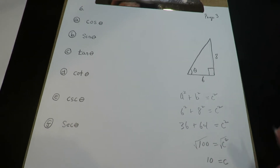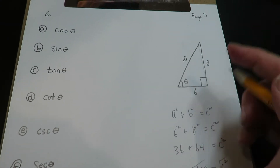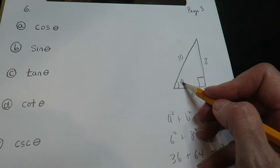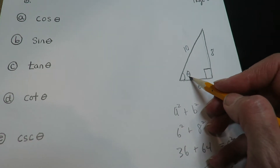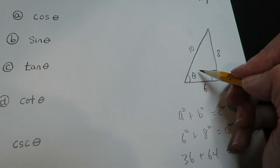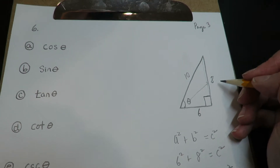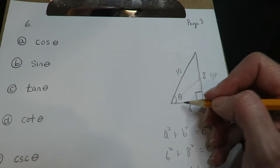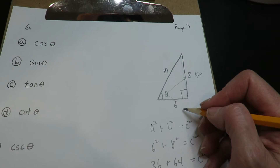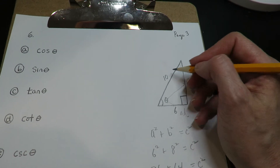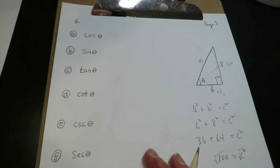So now we've got that — this is 10 — and we know where our angle is. Our angle is here, and we just have one angle in this triangle we're looking at. The eight is across from the angle, so this is my opposite. The six is touching the angle, so this is my adjacent. And we know this one is my hypotenuse.